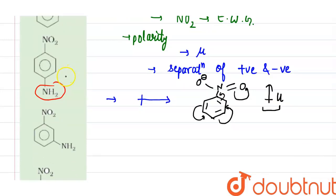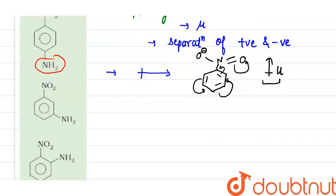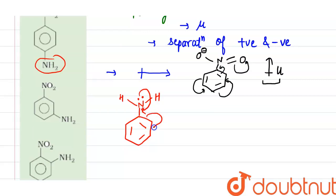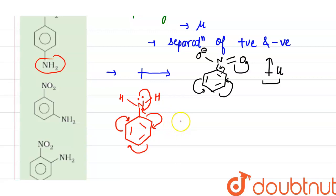Now let us see the second compound. The reverse of nitrobenzene happens in aniline. In aniline, the electron density shifts towards this side. Here the NH2 group is present on the ring, which is an electron-donating group. Thus the electron density will move towards the ring in aniline, so the dipole moment will be directed downwards.